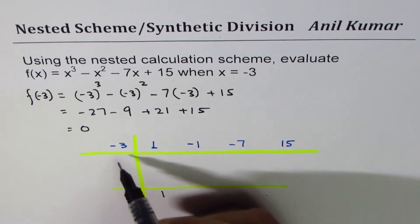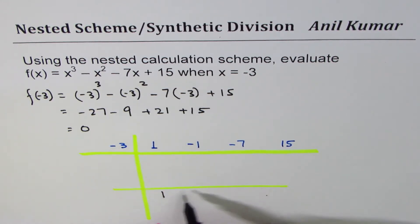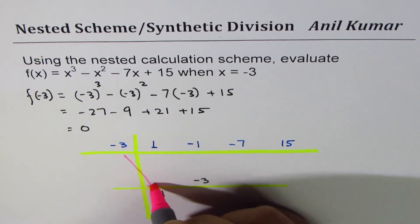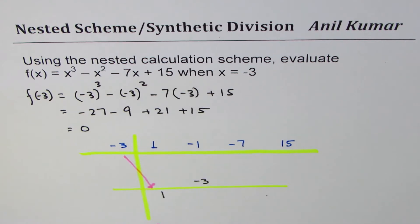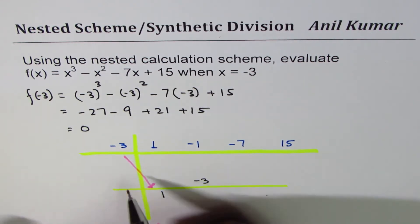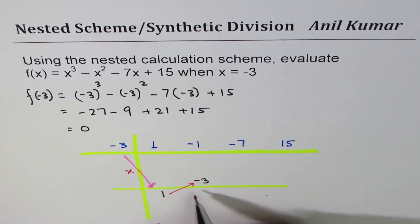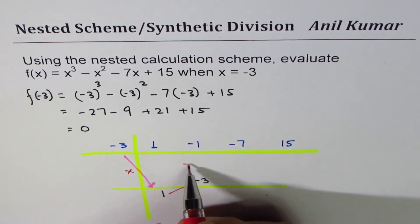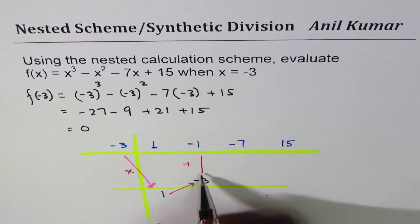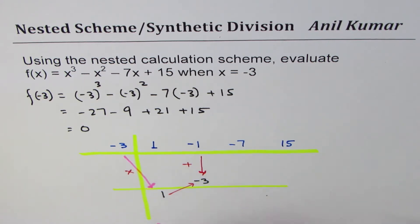Bring down the first term, so 1. Multiply -3 by 1, you get -3. This operation is multiplication - when you multiply, place the number and then you add and write the number under the line. So -1 - 3 when you add will give you -4.